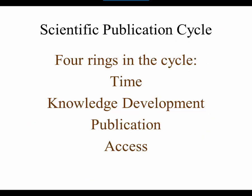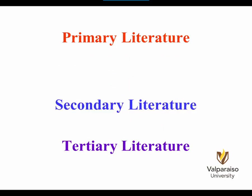In summary, there are four rings in the diagram representing time, knowledge development, communication of knowledge through publication, and accessing publications and the knowledge within. As a student, knowing what you seek in terms of the inner rings will help you choose the appropriate access method. First, though, you need to understand the difference between primary, secondary, and tertiary literature.